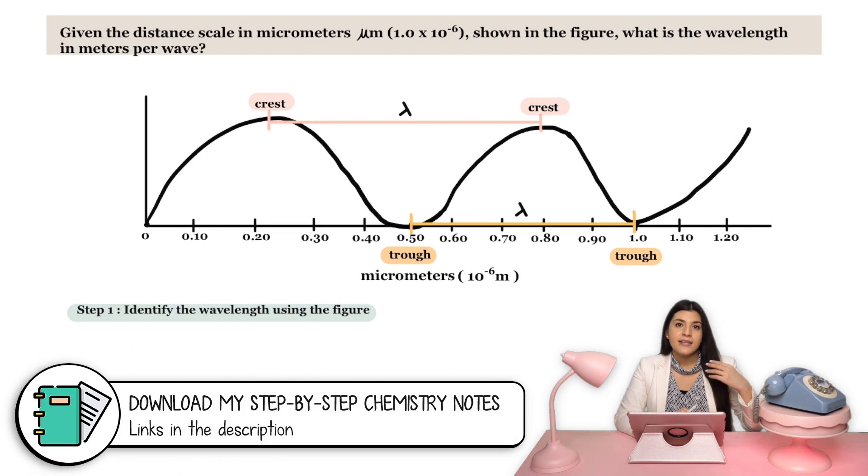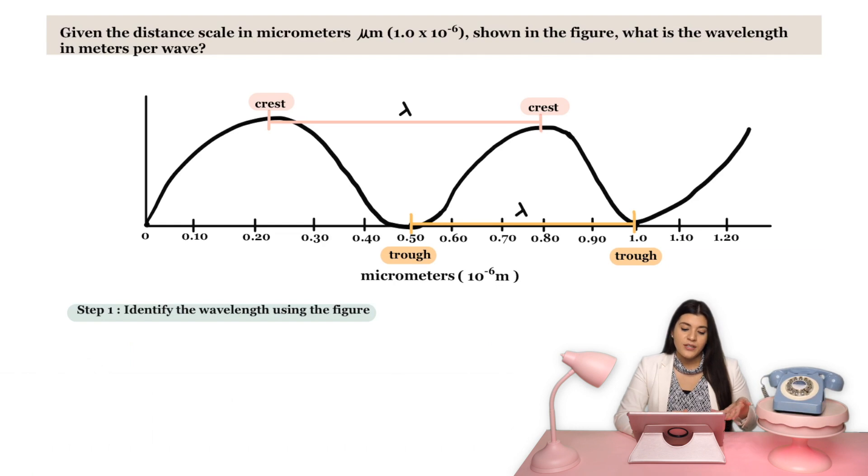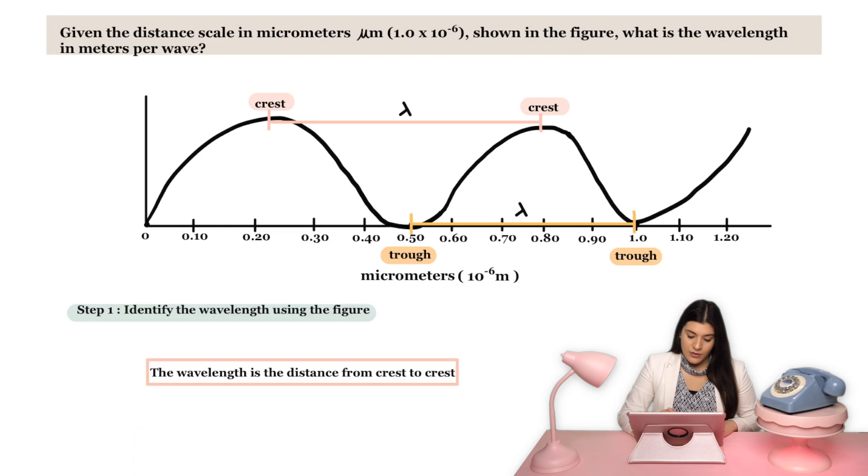So there's something known as a crest or there's something known as a trough. There are two different ways to figure out the overall wavelength.